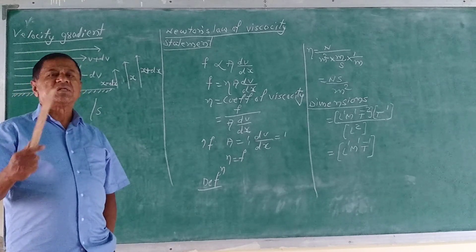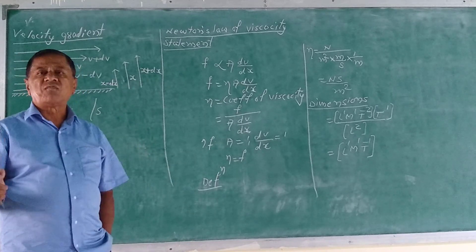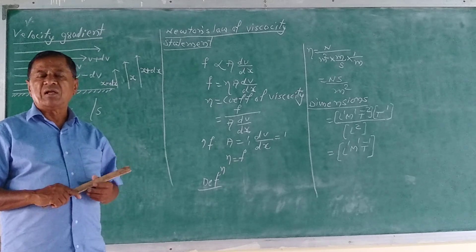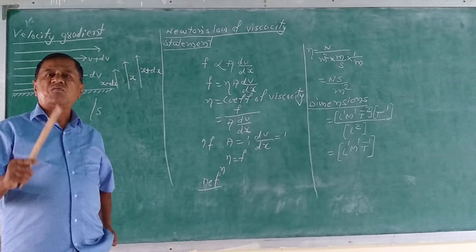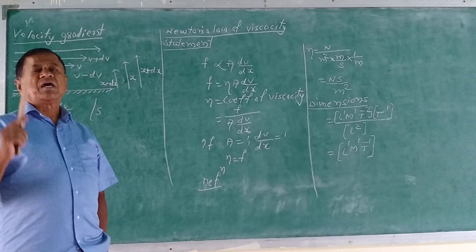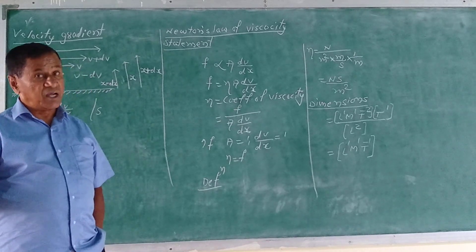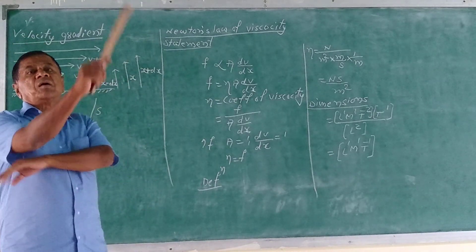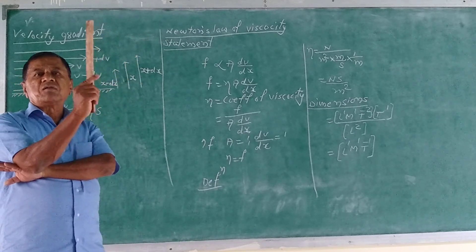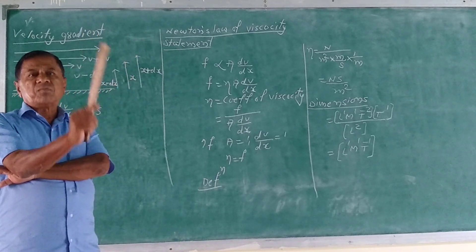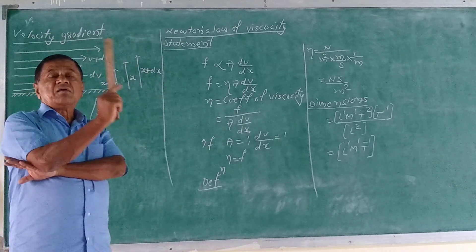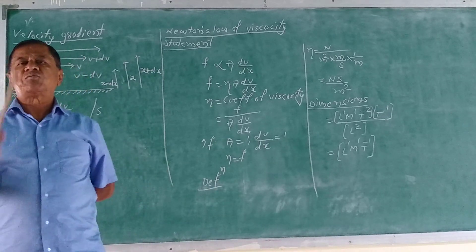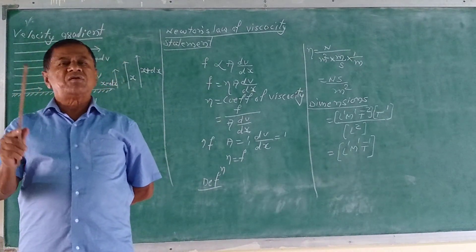By Newton's law, the viscous force acting on a layer of the liquid is directly proportional to the surface area of that layer and also directly proportional to the velocity gradient.